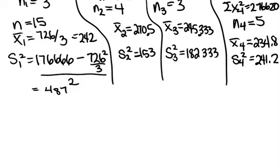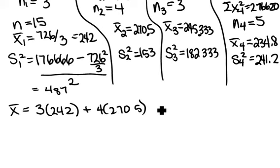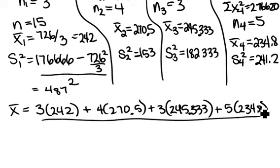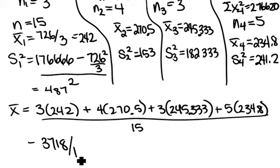The next step is to find what we call our grand or overall mean, which would be if we averaged all of our data and ignored what groups we had. This can be obtained by looking at the individual means you found, where you take the sample size times the individual mean for each group: for group one, 3 times 242; second group, 4 times 270.5; the next group we have a sample size of 3 and a mean of 245.333; for the next group we have a 5 and a 234.8, and then we divide by our total amount of data, which we said was 15. So what you'll get here is 3718 out of 15, and that gives a grand mean of 247.8667. So that would be if you averaged all the data at once.